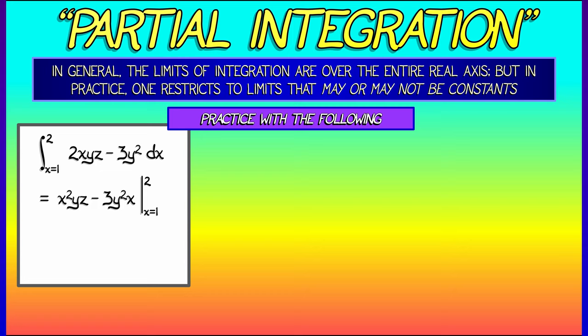Evaluating this as x goes from 1 to 2 means we plug in x equals 2, then subtract off what we get when we plug in x equals 1. This gives us (4 minus 1) times yz minus 3y² times (2 minus 1), which yields 3yz minus 3y².